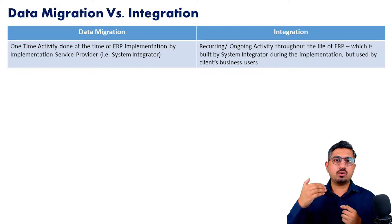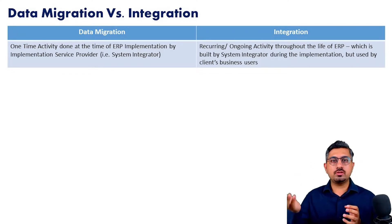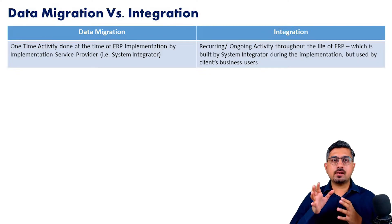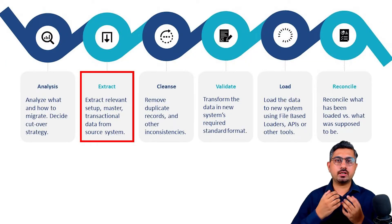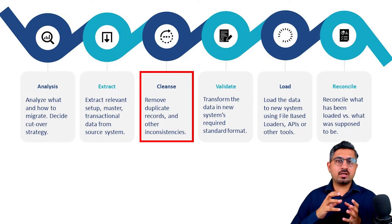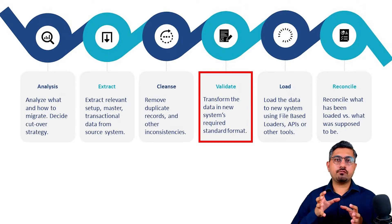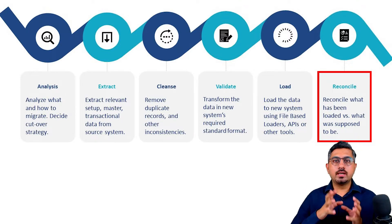Integration, however, is more recurring in nature, simply because the co-existing software will continuously exchange data with the ERP — some data coming in from those systems, some going out — on a recurring day-to-day basis for the entire lifetime of the ERP. Looking at the steps involved in data migration, as covered in a previous video, they include: extract the data from the old software, cleanse the data to clear impurities, transform the data into the required format of the new ERP, load that data, and then reconcile it. This is the five-step process typically followed in data migration.